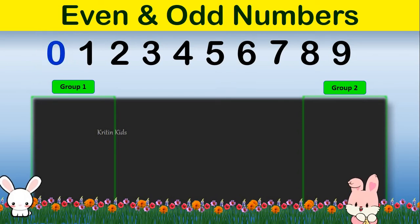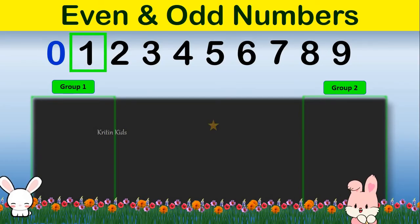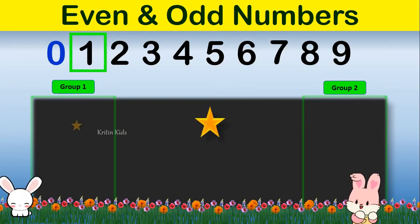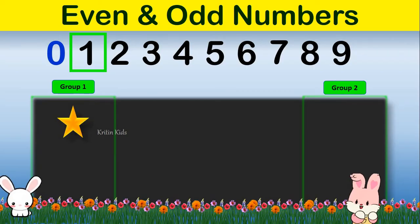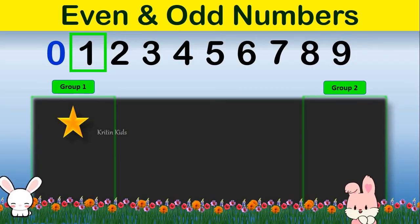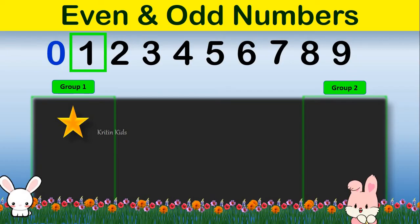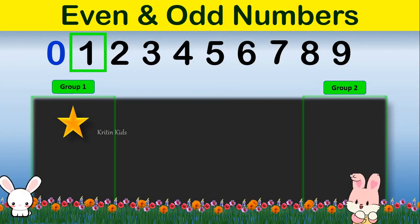The next number is 1. Now if you divide 1 between 2 groups, we can see that one group has 1 item and another group doesn't have any item, meaning both the groups don't contain the same number of items. So 1 is an odd number.